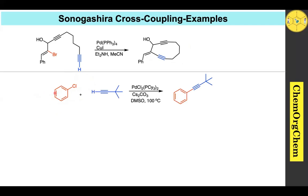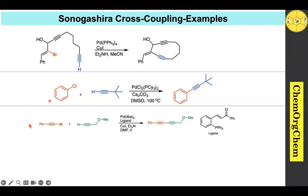Example 9: Here, an aryl chloride is used — normally a poor substrate for Sonogashira cross-coupling. However, when an electron-rich phosphine ligand is employed, it boosts the reactivity sufficiently to undergo the coupling reaction and produce the corresponding alkyne product.